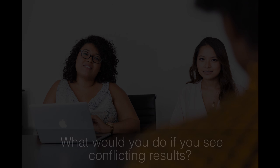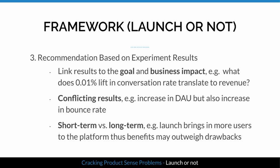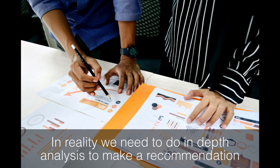The interviewer might ask what you do if you see conflicting results, such as an increase in DAU but also an increase in bounce rate. Translate that to impact on the user and the business, and consider both short-term and long-term effects. For example, even if bounce rate increases, the launch could bring in more users to the platform, and in the long term the benefits might outweigh the drawbacks — but in reality you'd want to get to the numbers and do in-depth analysis.